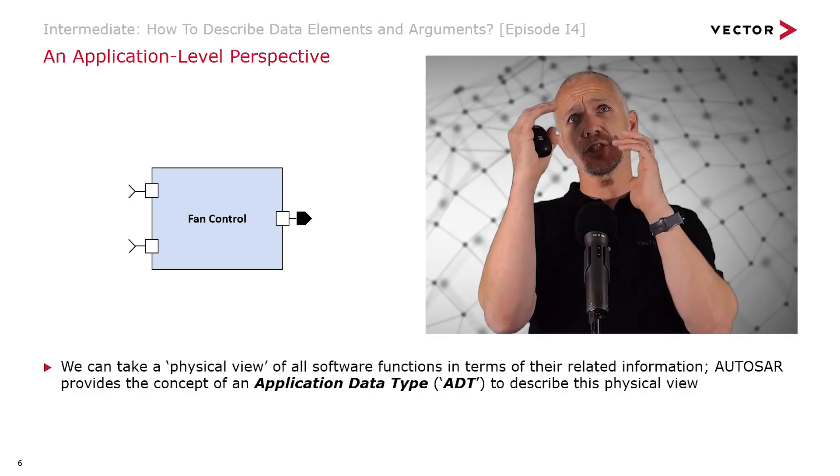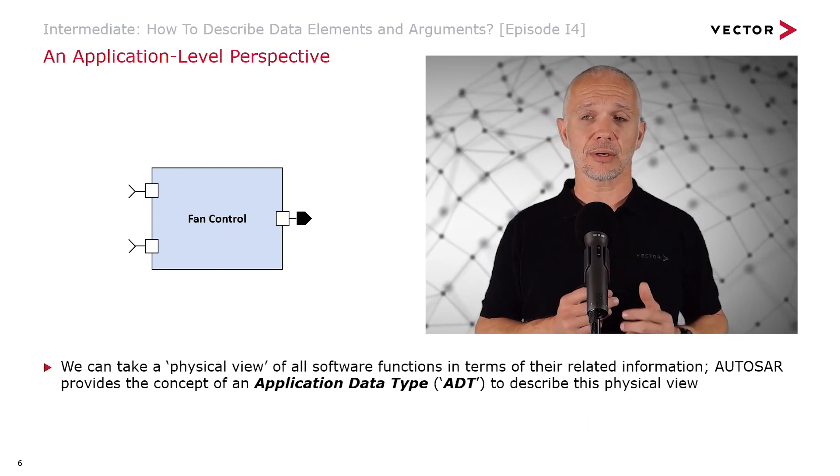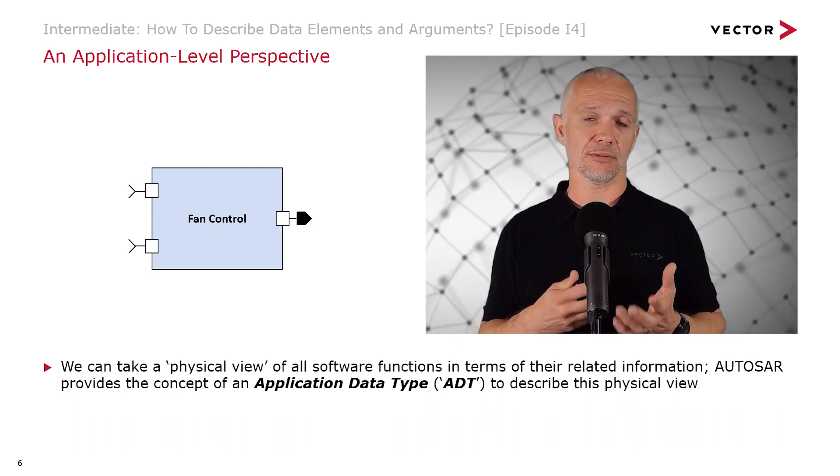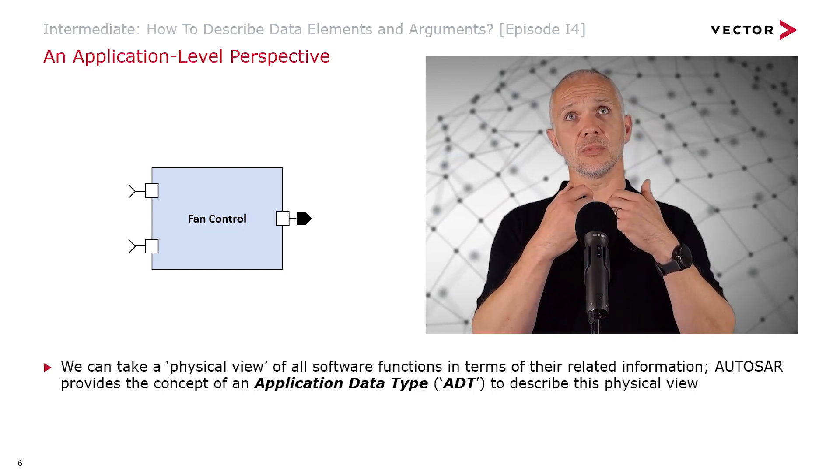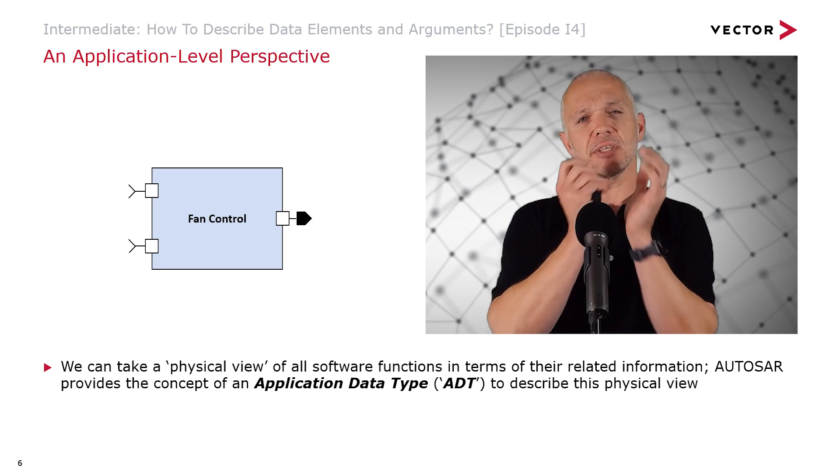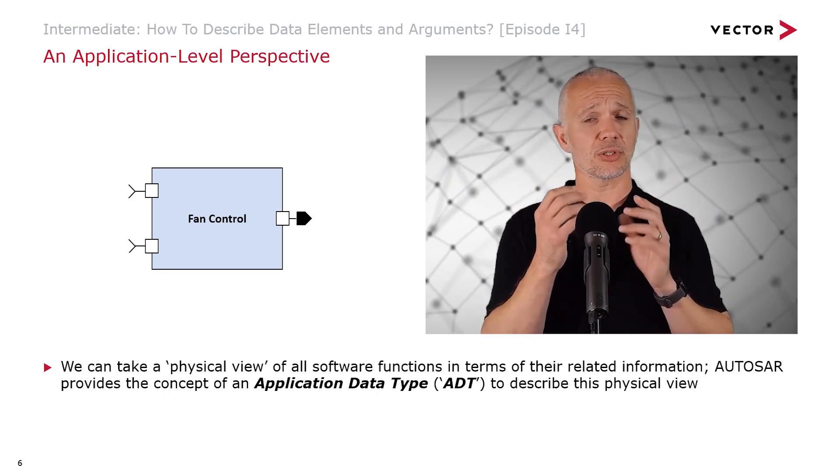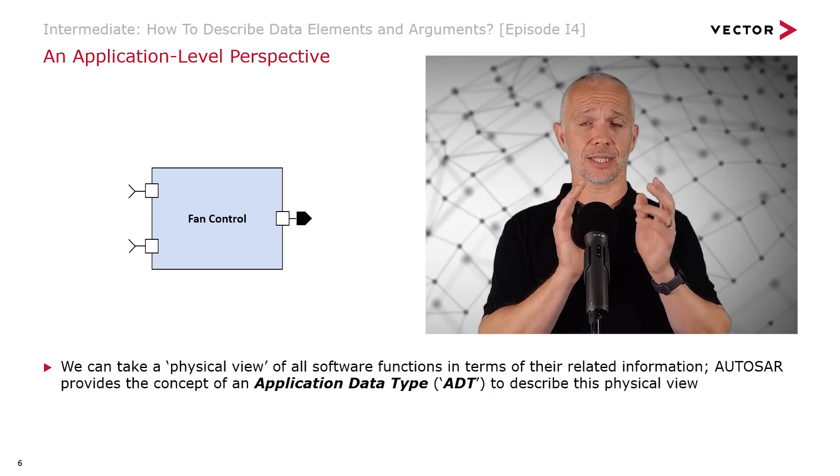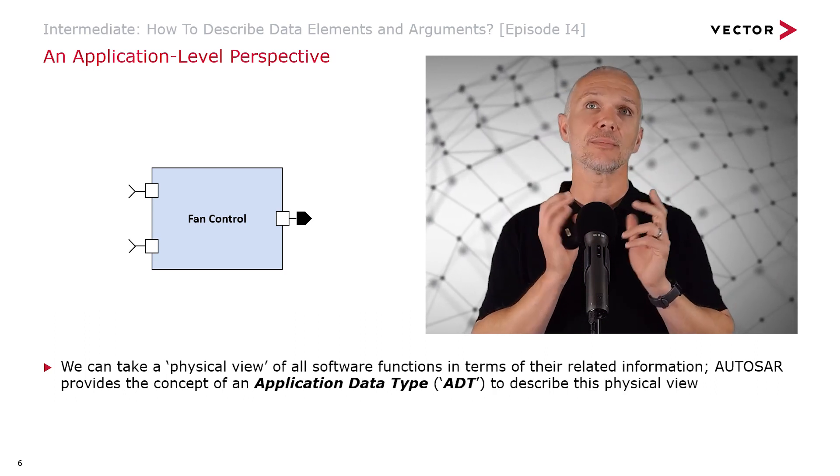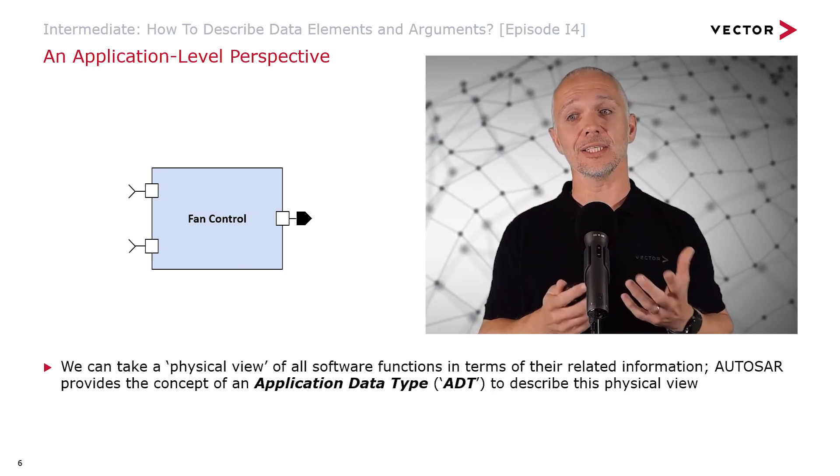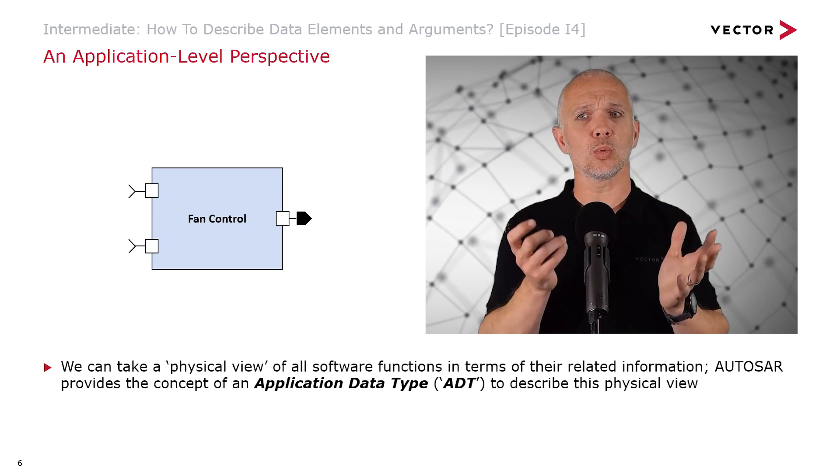At the first and most intuitive level in the AUTOSAR process, we can think about an application level perspective on information. In this sense, we're taking a physical world view on information that's being used by software functions. AUTOSAR gives us a concept of an Application Data Type or ADT for this purpose.